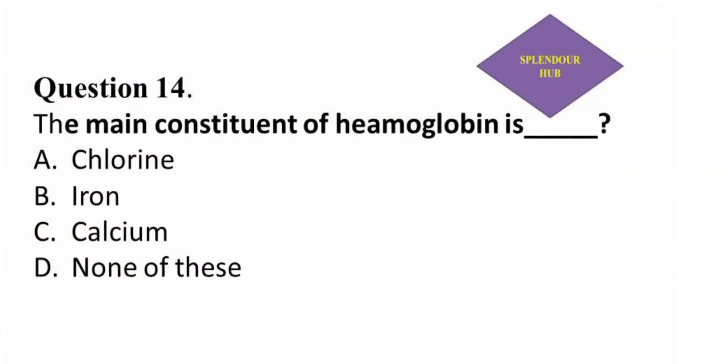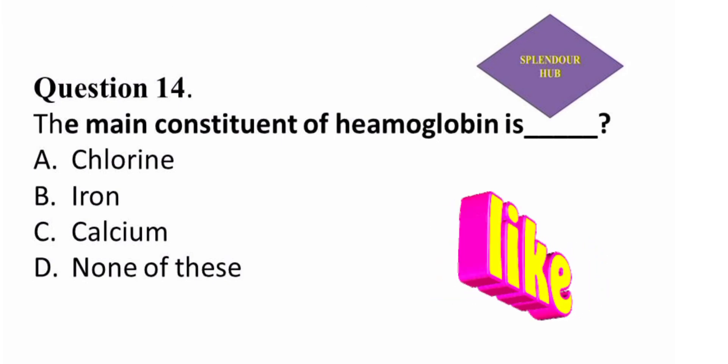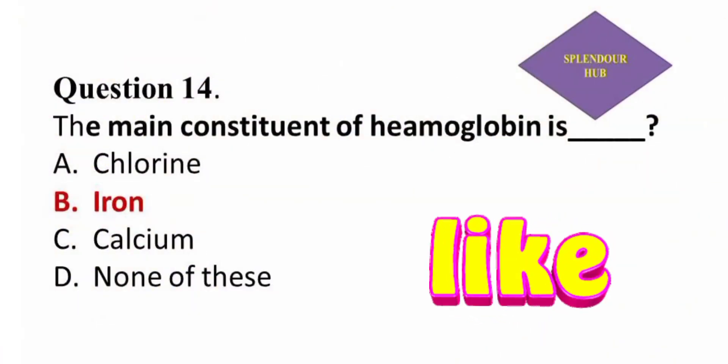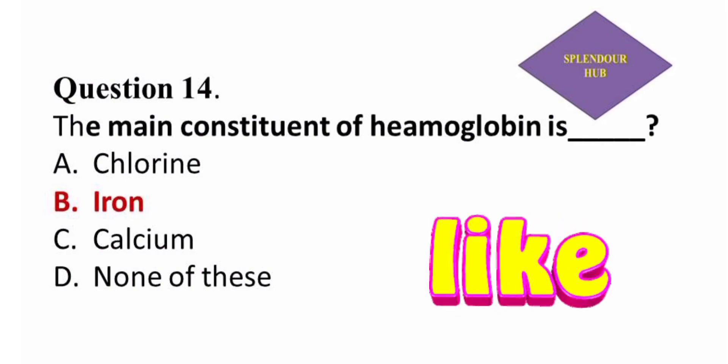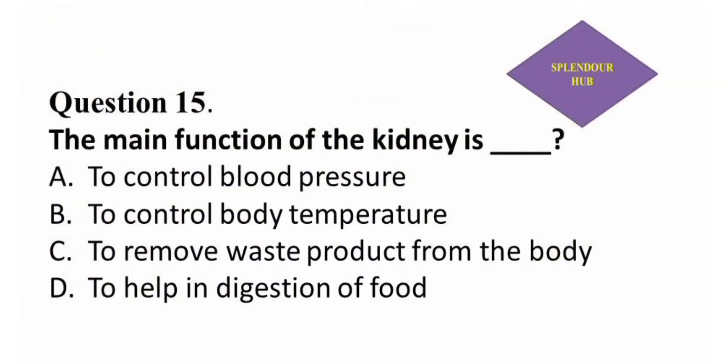Question 14: The main component of hemoglobin is — option A: chlorine, option B: iron, option C: calcium, option D: none of these. Answer: The main component of hemoglobin is iron.